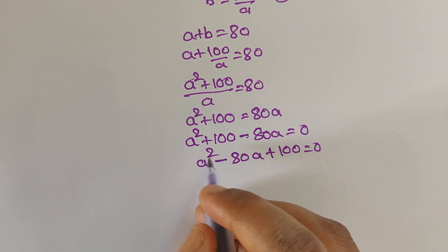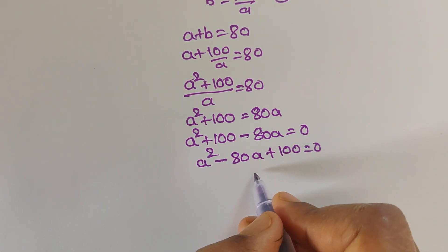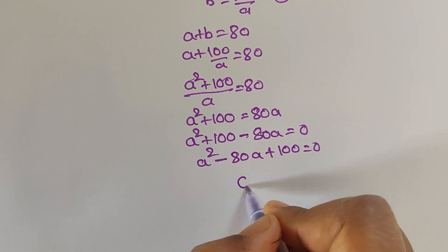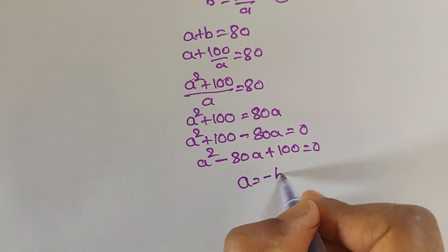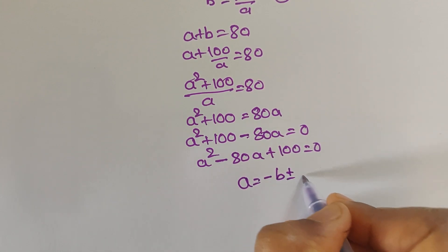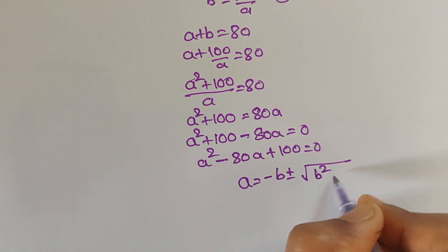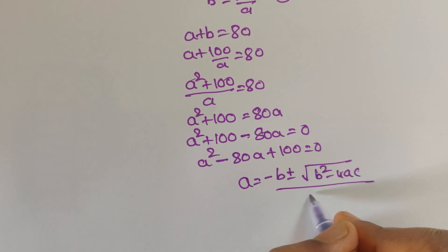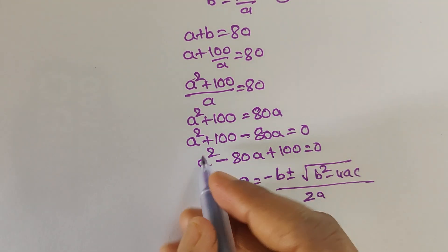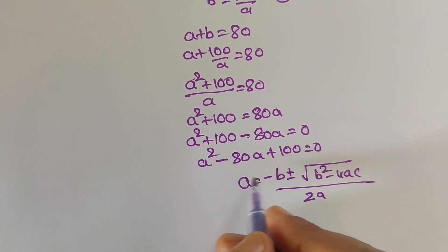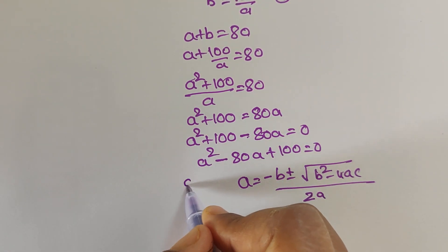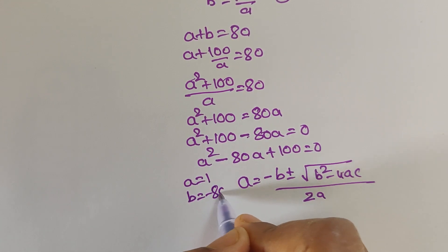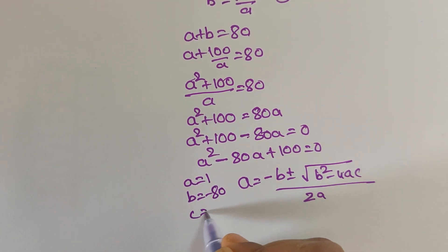We can apply the quadratic formula: a equals negative b plus or minus square root of b squared minus 4ac, all divided by 2a. The values are: a equals 1, b equals negative 80, and c equals 100.